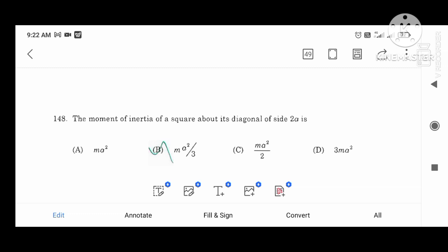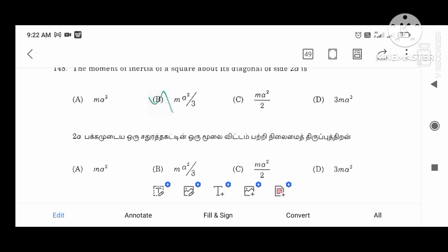The amount of the interior of the square about the diagonal of your side 2A. M.A.2 divided by 3.